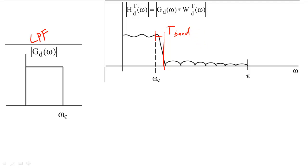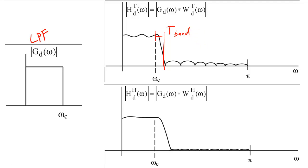Truncating the filter would create what we call a transition band. If we used the Hamming window instead, the ripples would be reduced in the pass band and the stop band. However, the transition band would be widened by a factor of two.